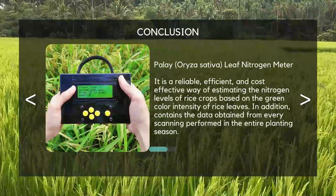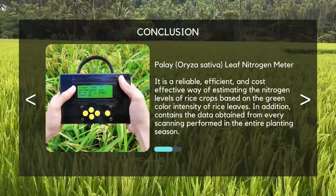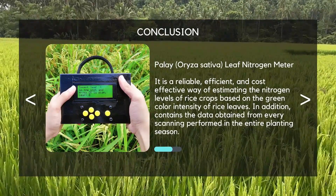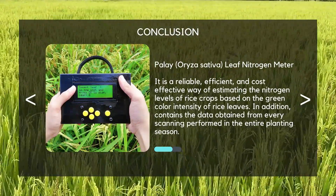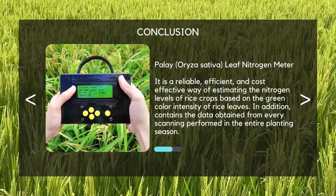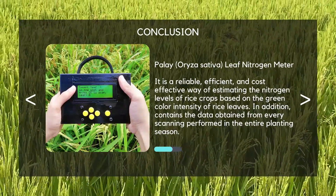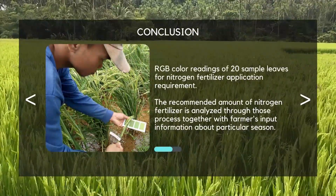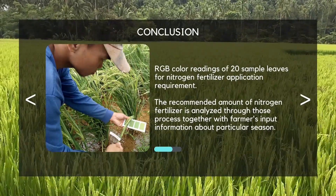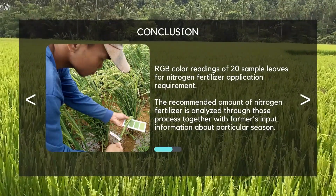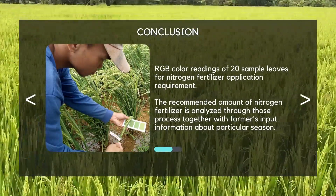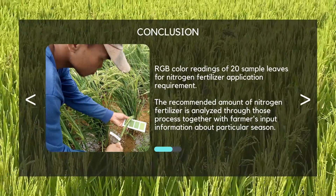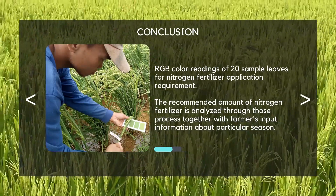The researchers developed a Palay Leaf Nitrogen Meter. It is a reliable, efficient, and cost-effective way of estimating the nitrogen levels of rice crops based on the green color intensity of rice leaves. The recommended amount of nitrogen fertilizer is analyzed through this process together with farmers' input information about a particular season.